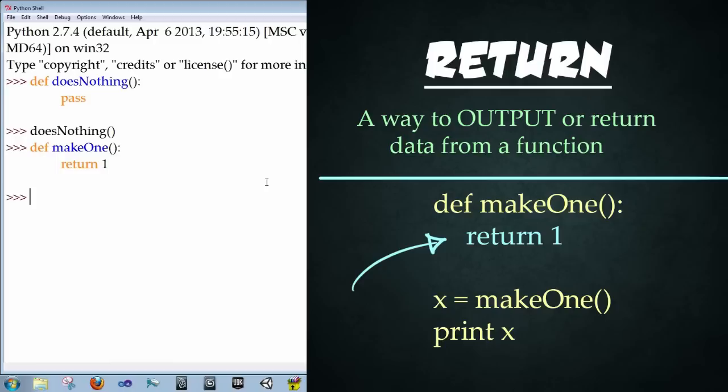Now we're going to type x equals makeOne, the function that we just created. Enter. And now type print x, enter. And now it's one. Perfect. So now we've got a way to return or output from a function. Excellent.